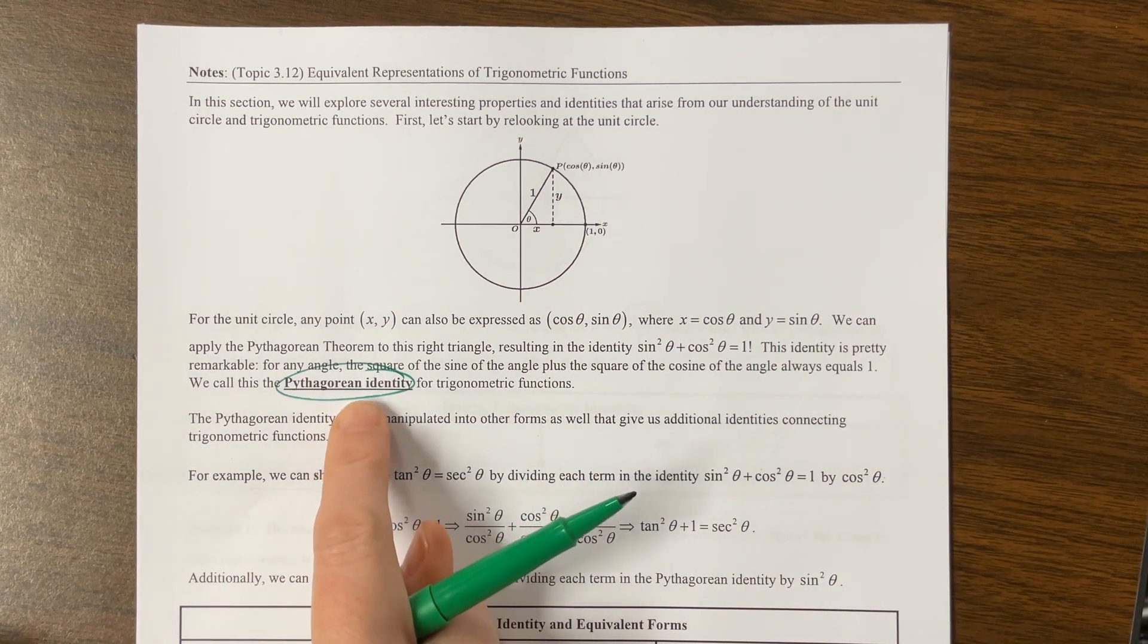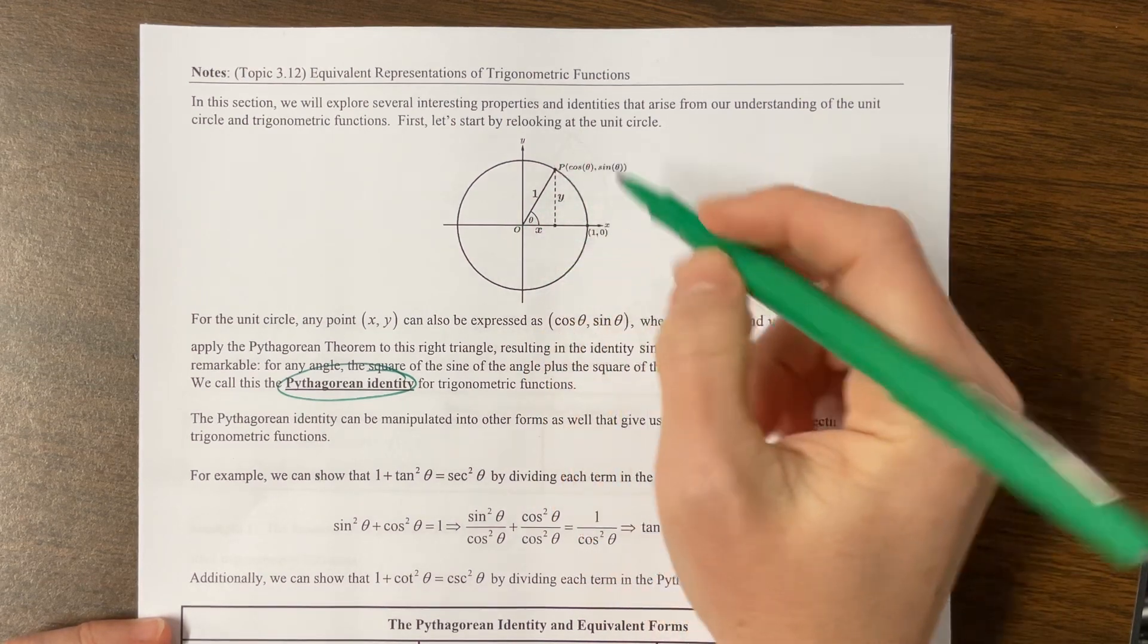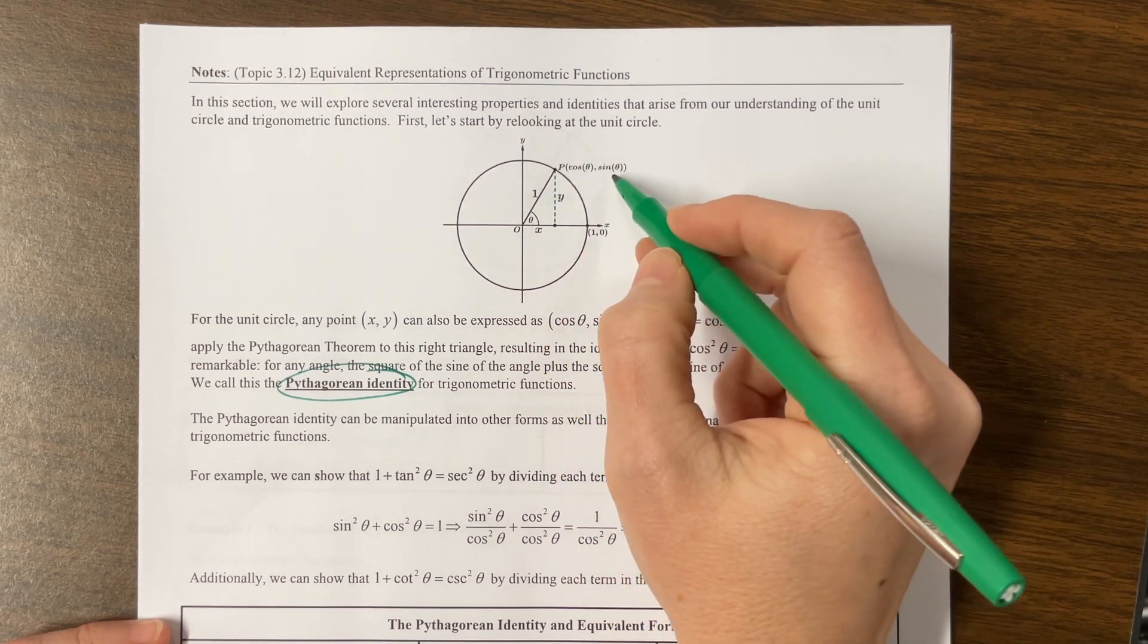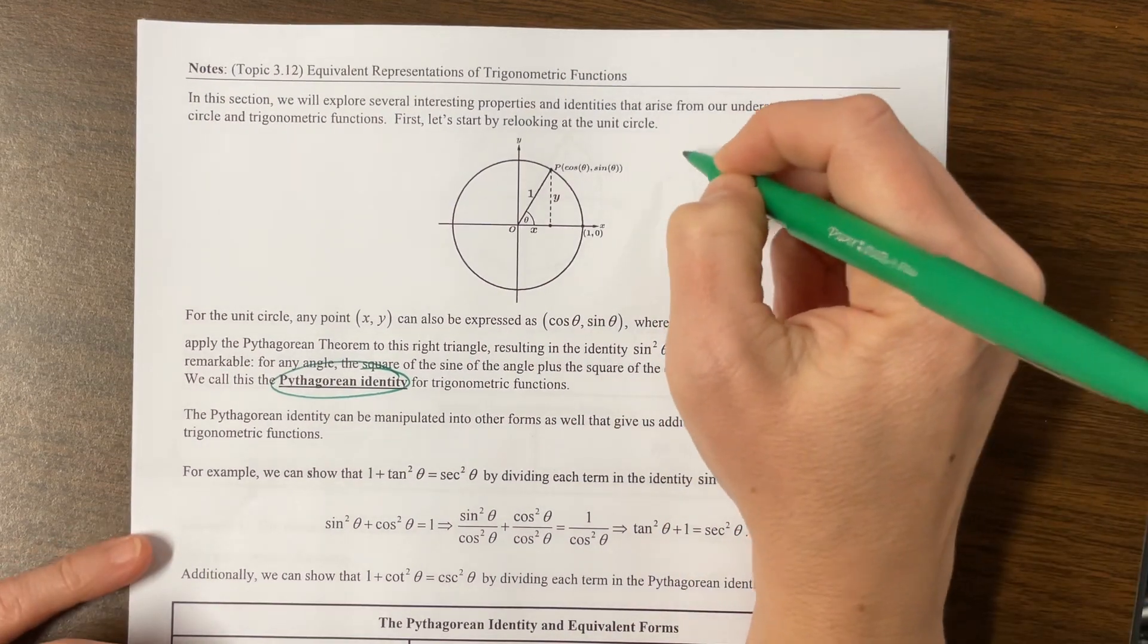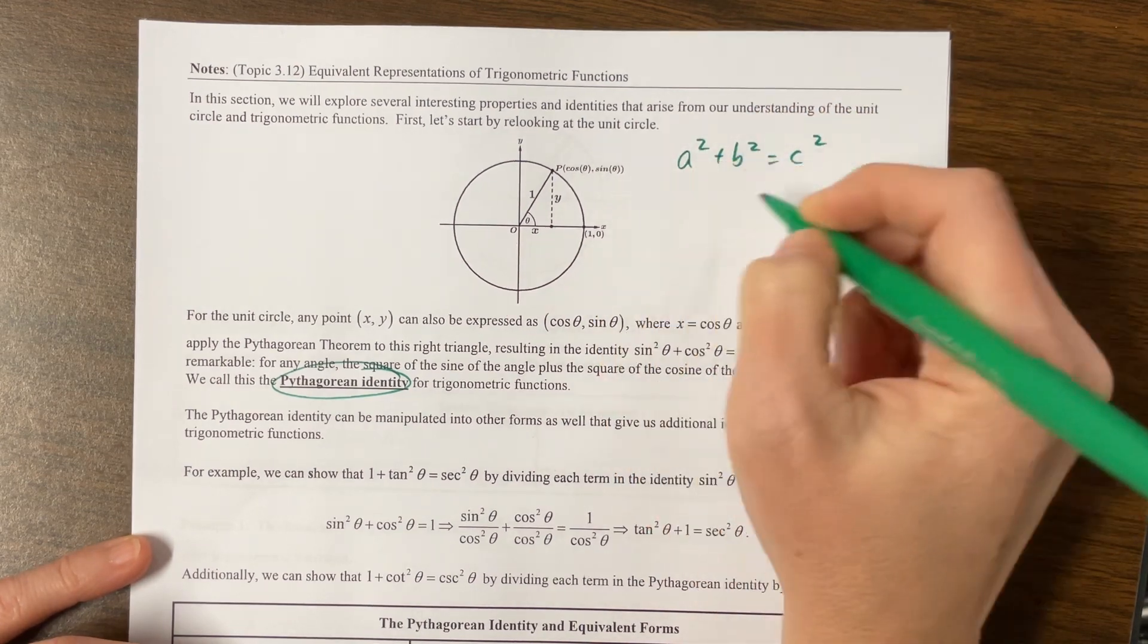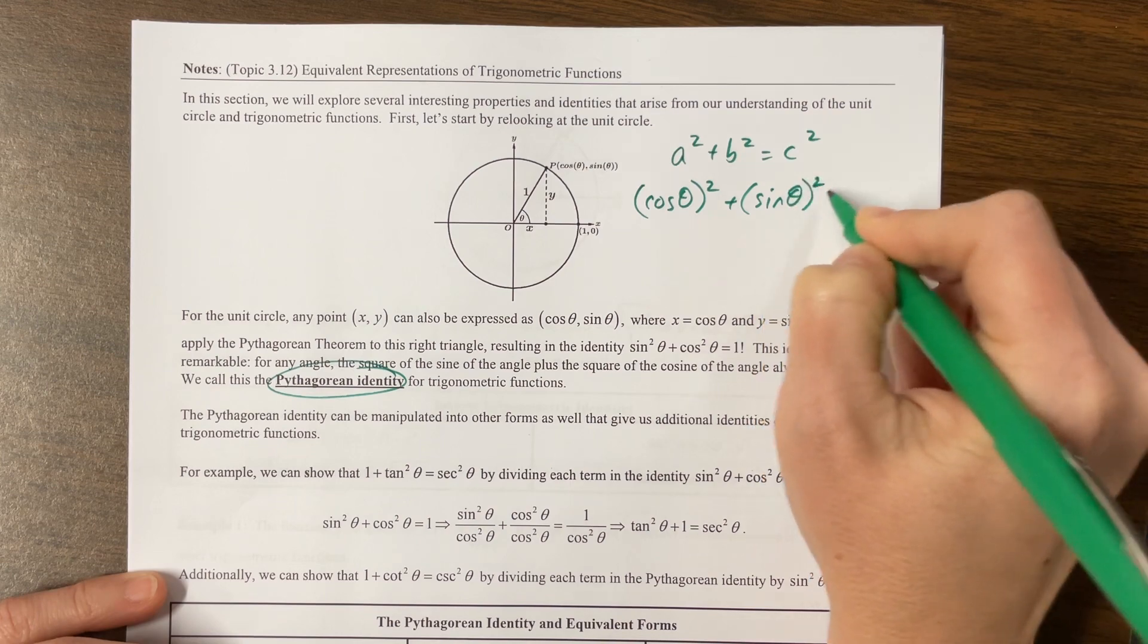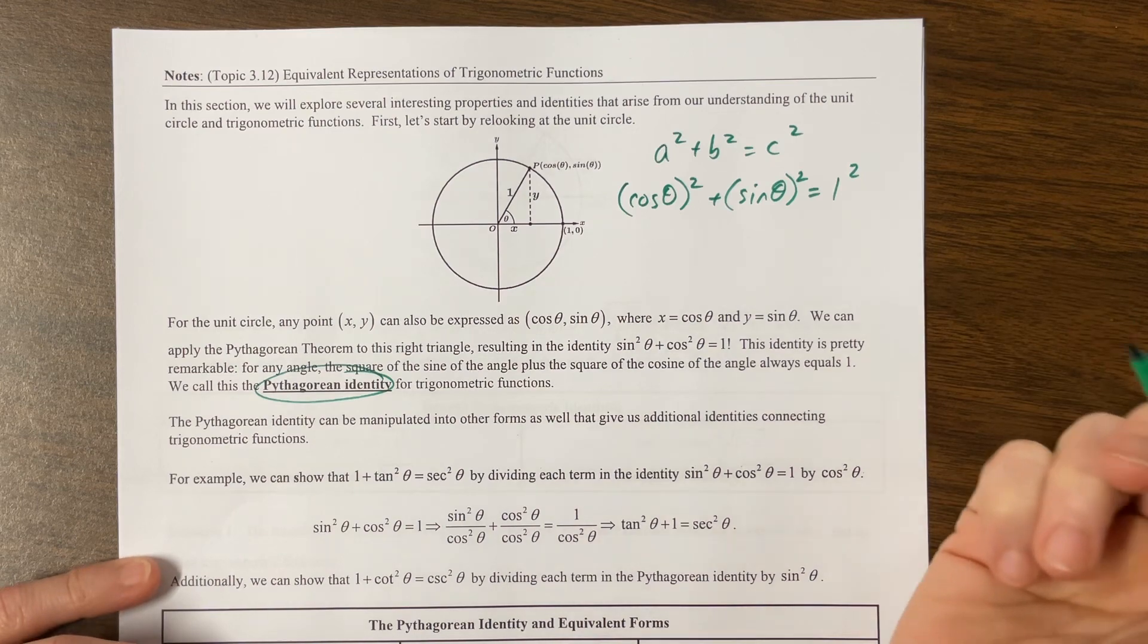So the first thing is what we call the Pythagorean identity, and that comes from the fact that we can form a right triangle where its x-coordinate here is cosine of the angle theta, its y-coordinate is sine of the angle theta, and the hypotenuse on the unit circle is always 1. So we know from Pythagorean theorem that a squared plus b squared equals c squared, or in other words, the x-coordinate cosine of theta squared, plus the y-coordinate sine theta squared, is equal to the radius squared.